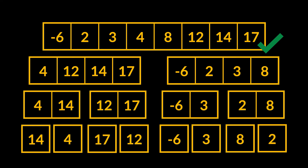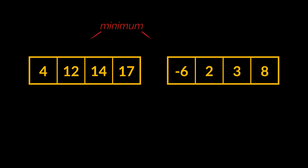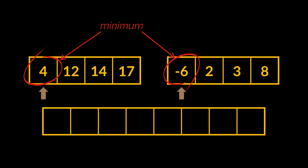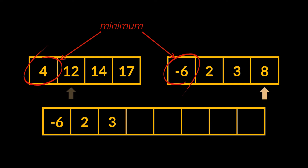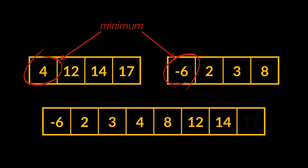How is this merging done exactly? Two subarrays are merged by iterating simultaneously over both arrays. Because we know these arrays are sorted, the minimum element in each subarray is at the first index. So if the first element of the first subarray is smaller than the first element of the second subarray, we know that element is the smallest in both arrays and should be placed first in the merged array. This same thinking applies to each element, and by iterating over both arrays at the same time we assemble the sorted array.